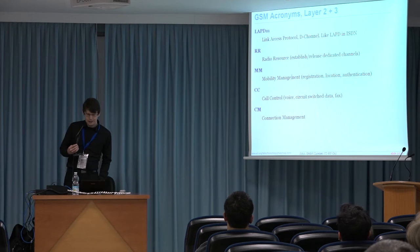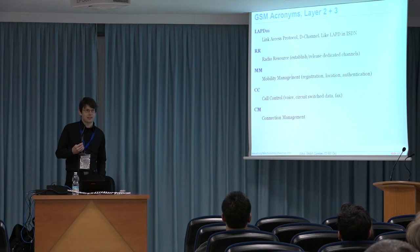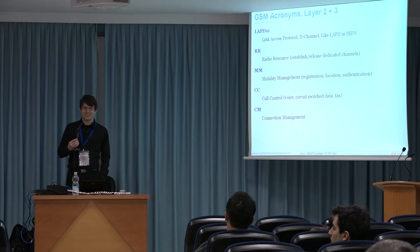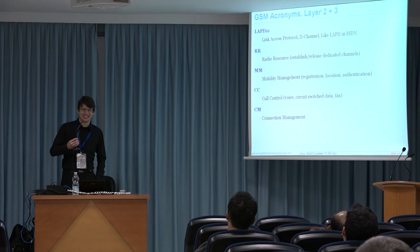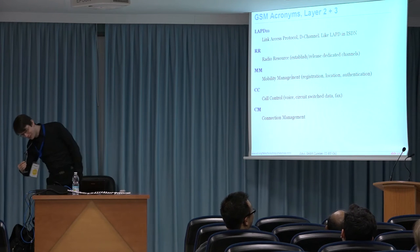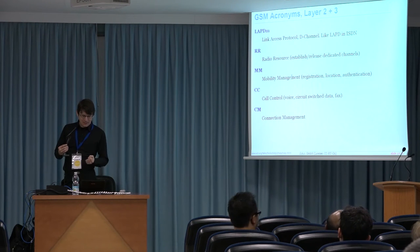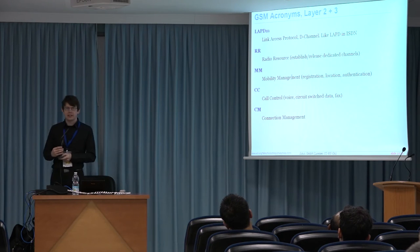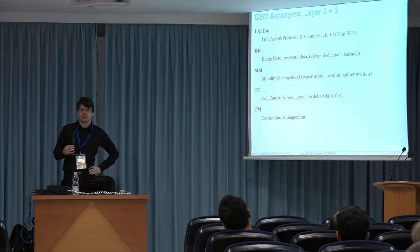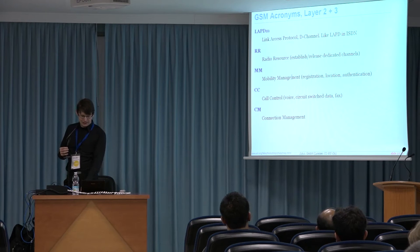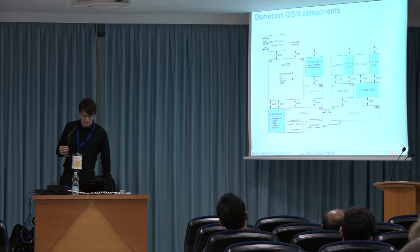CC is call control — for voice, circuit-switched data, and fax. Using CC you establish voice bearers and other bearers. Call control is derived from Q.931, the signaling protocol for voice telephony in ISDN. Think more H.323 than SIP — more in the ITU call control area. Connection management I'll skip for simplicity. So we had the diagram of the GSM network; now I'll show what components exist in the OsmoCom universe to run such networks.